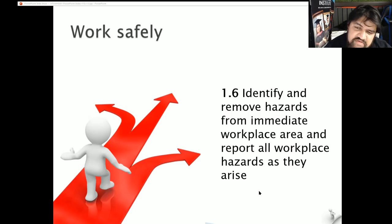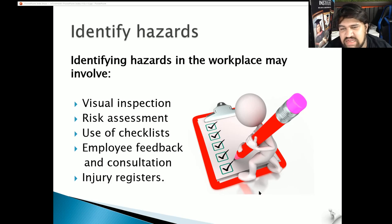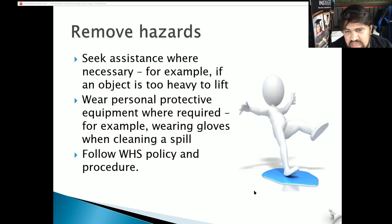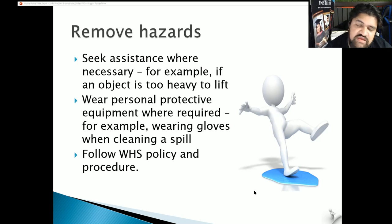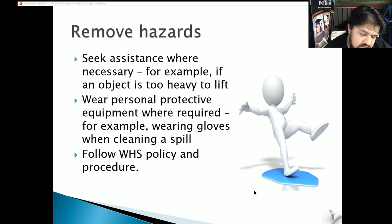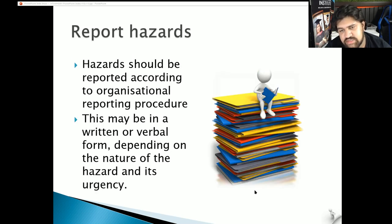Section 1.6: Identify and remove hazards from the immediate workplace area and report all workplace hazards as they arise. When identifying hazards, we might be doing visual inspections, risk assessments, using checklists, involving employees and taking their feedback, and reviewing injury registers or forms. To remove hazards, seek assistance where necessary - for example, if an object is too heavy to lift, always seek assistance. Wear personal protective equipment where required such as gloves, non-slip shoes, steel-capped boots, aprons. Also follow WHS policy and procedures. Hazards should be reported according to organizational reporting procedures, which may be in written or verbal form depending on the nature and urgency of the hazard.